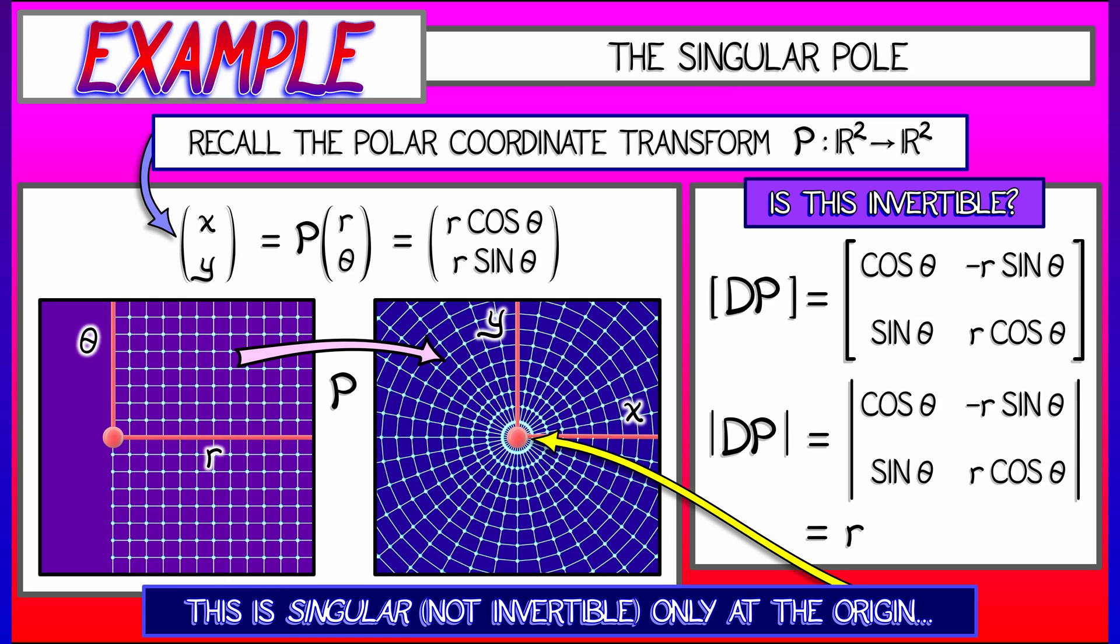That's where the grid goes singular. That's where you can't say, what is theta at the origin? It's not well-defined. Indeed, this coordinate transformation is non-invertible.